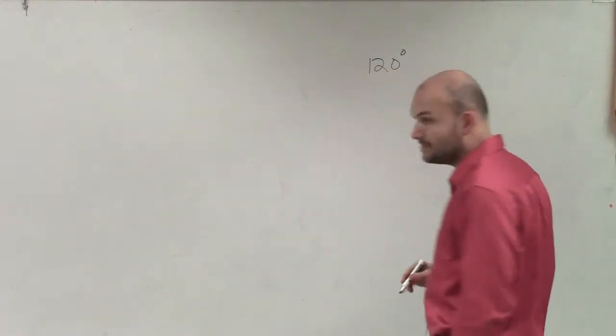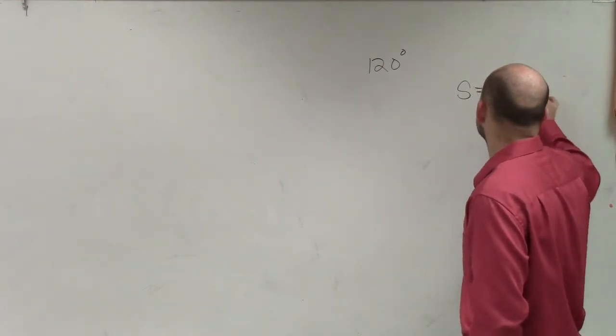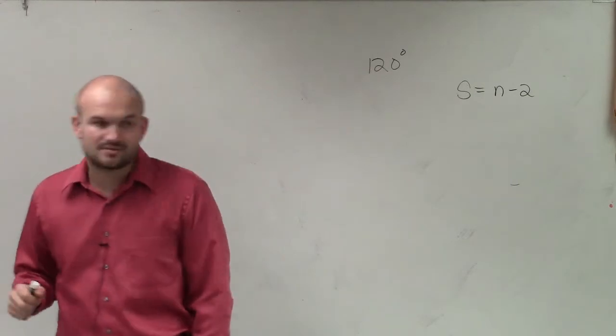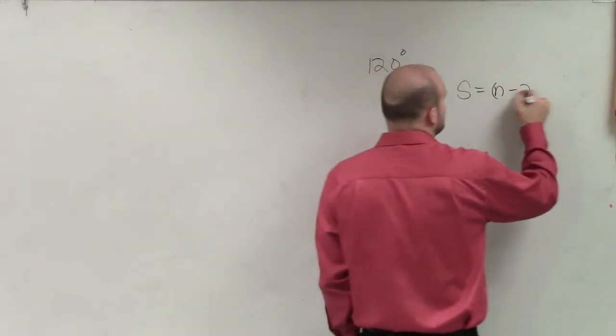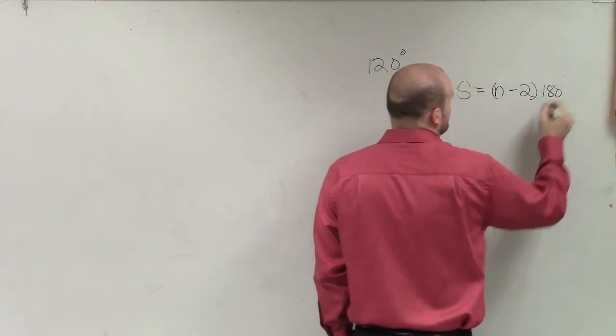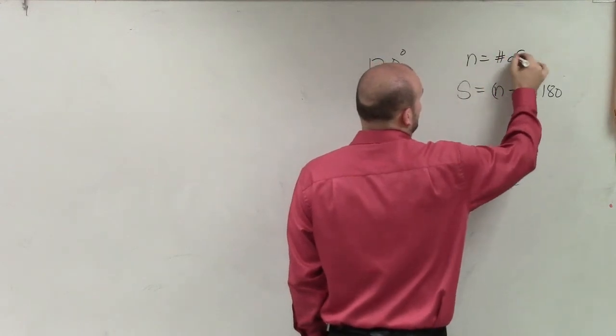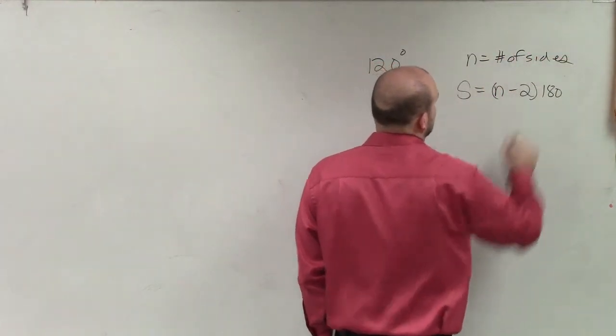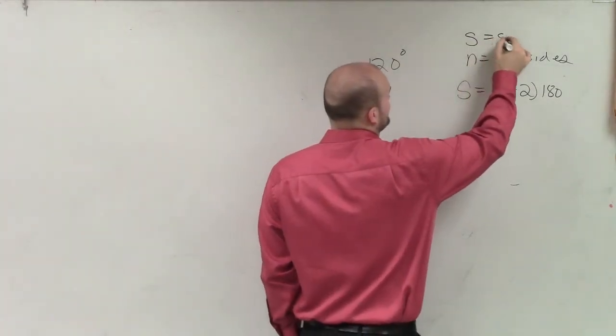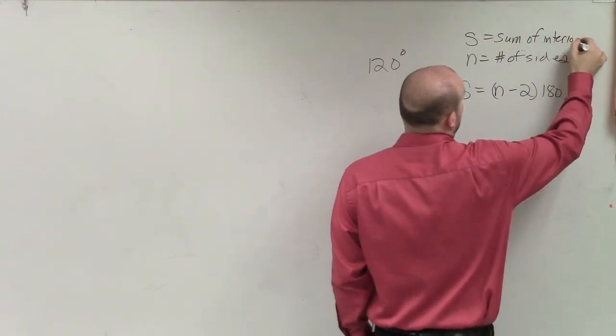To find the sum of all the interior angles, the formula was n minus the number of sides, where n minus 2 times 180. Where n equals the number of sides, and S equals the sum of interior angles.